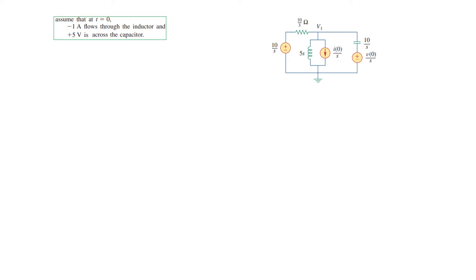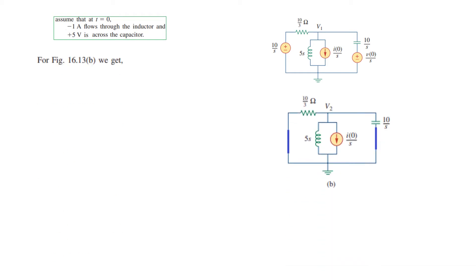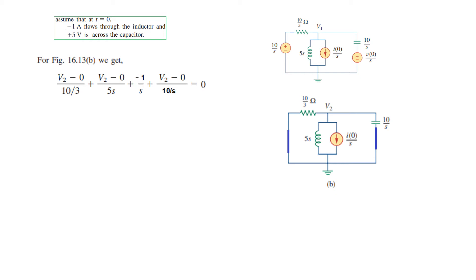Now for the second source: we use that source and make the other two zero (one open, one shorted). Writing KCL at the node again: the first term is v2/(10/3), the second term is v2/(5s). There is also a current source to account for; the condition states i(0) = −1, meaning the initial inductor current is −1, so we add −1/s.